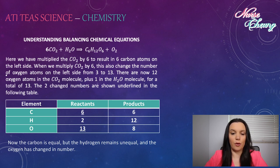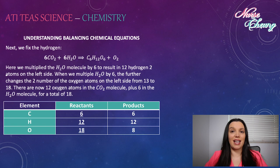Now the carbon is equal, but the hydrogen remains unequal and the oxygen has changed in number. Next, we're going to fix the hydrogen. Here we multiply the H2O molecule by six to result in 12 hydrogen atoms on the left side. When we multiply H2O by six, this further changes the number of oxygen atoms on the left side from 13 to 18. There are now 12 oxygen atoms in the CO2 molecules plus six in the H2O molecules for a total of 18.